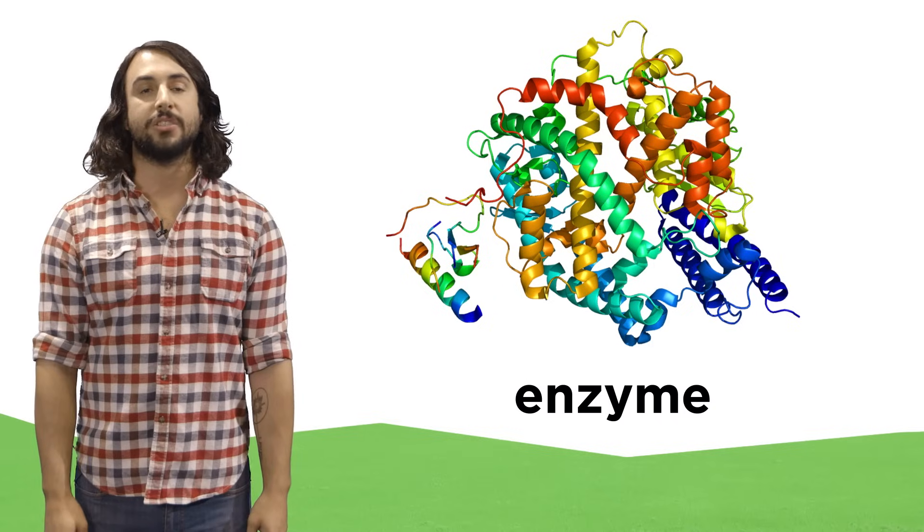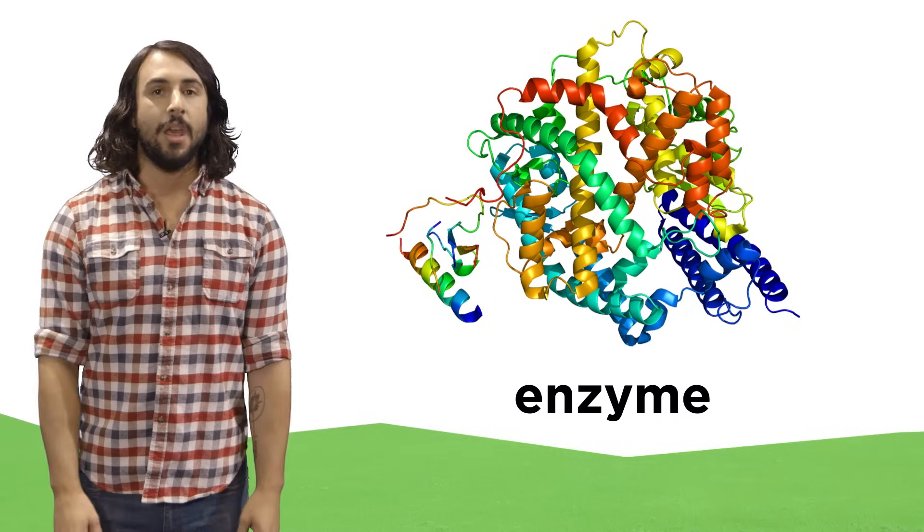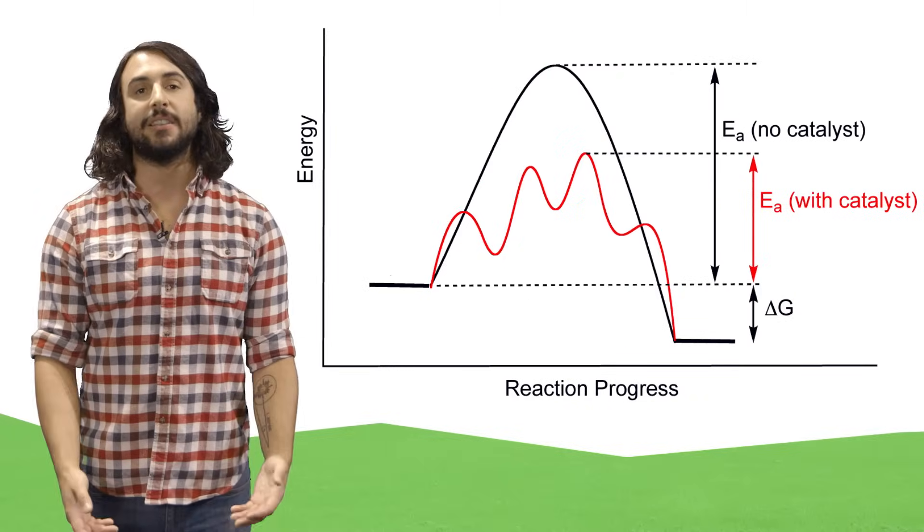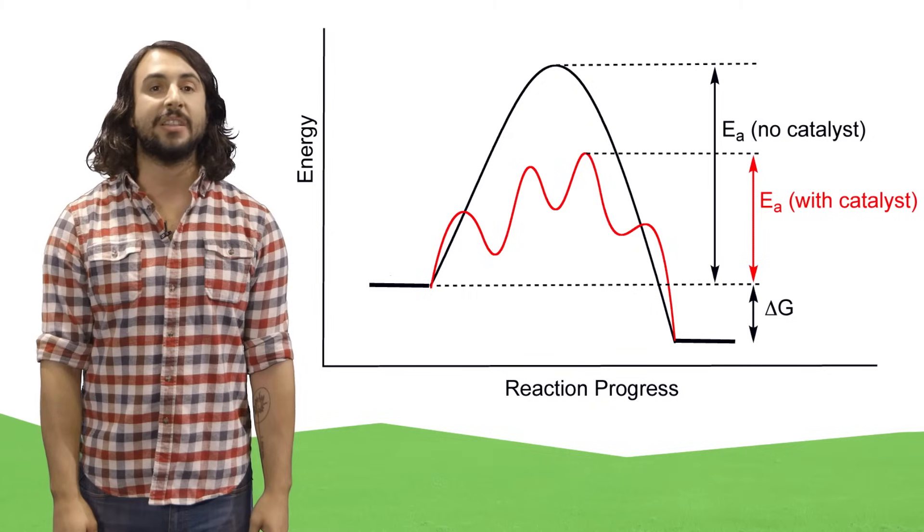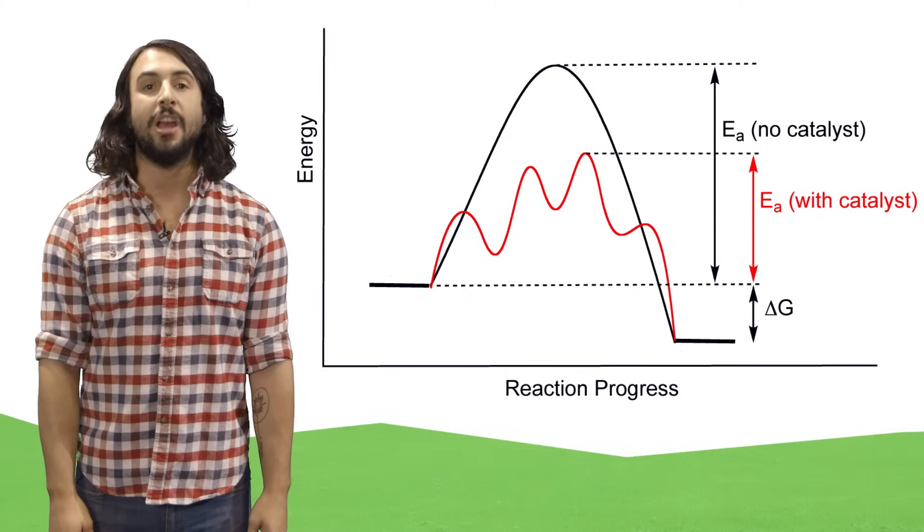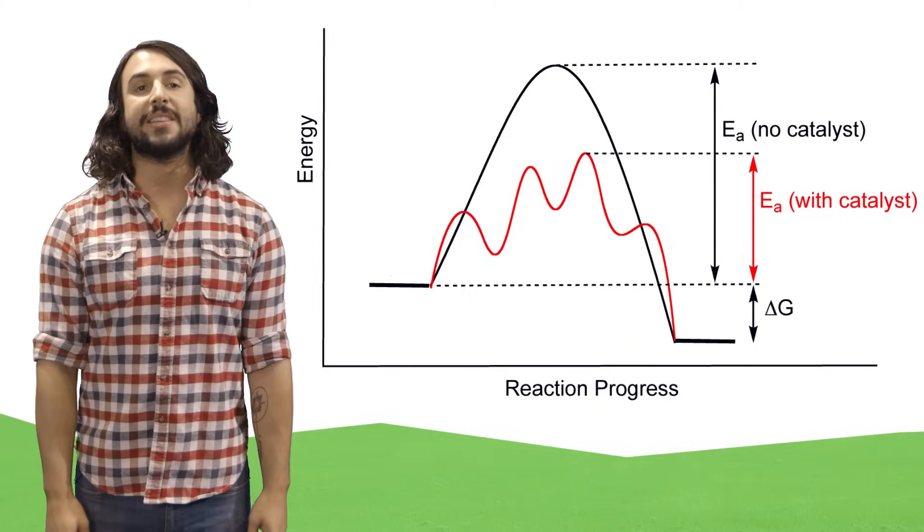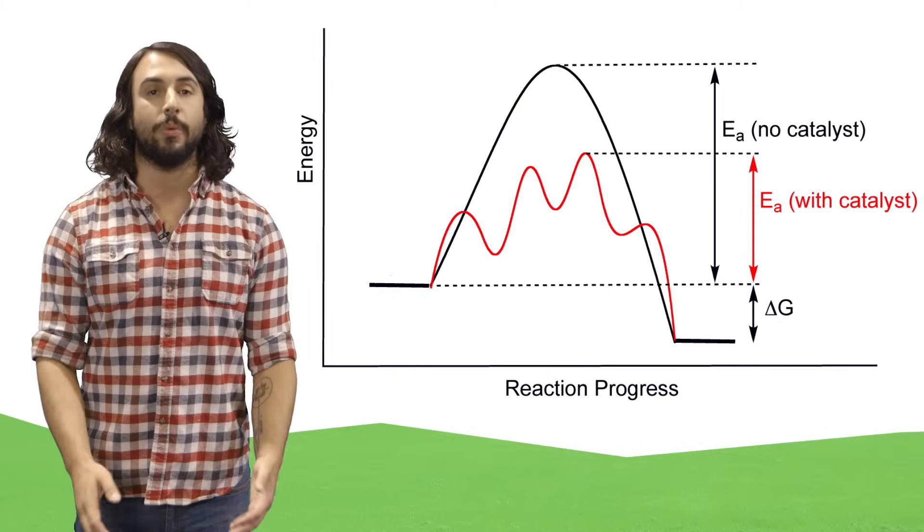One type of protein is called an enzyme. An enzyme is a protein that serves some catalytic function in the body. Remember that a catalyst is something that lowers the activation energy of a reaction, and enzymes catalyze biochemical reactions.